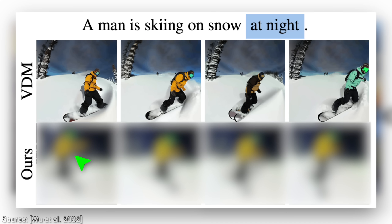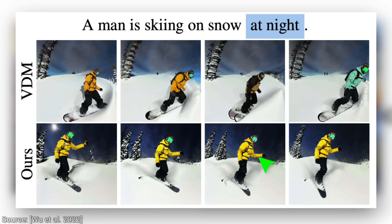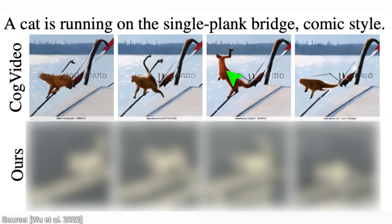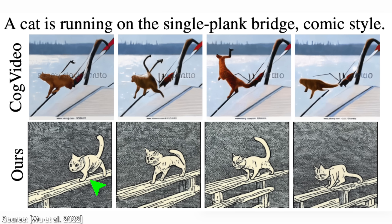So let's see the new method. Whoa! This is so much better! Let's do another comparison. This is CogVideo, another earlier technique. The prompt is: a cat running on a single plank bridge, comic style. I don't know about this one — I'm not sure if this is a cat, not sure if this is a bridge, and I'm not sure if this is in a comic style. The rest is fine though. So let's see the new one. Wow! This is an incredible improvement — but wait, in how long exactly?